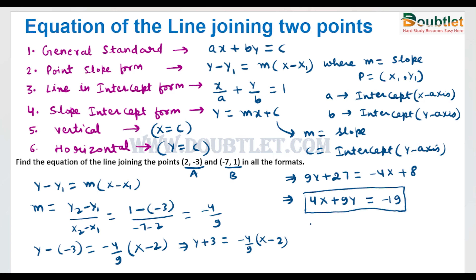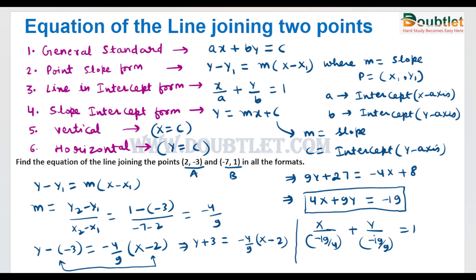The point-slope form has already been written as y minus y1 equals m times x minus x1. For the intercept form, dividing the constant term gives x over (minus 19 over 4) plus y over (minus 19 over 9) equals 1. The slope-intercept form is y equals (minus 4 over 9)x plus (minus 19 over 9).